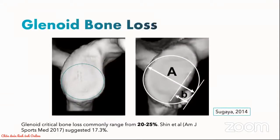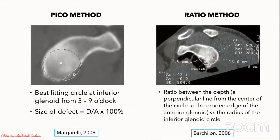If you view the glenoid en face using a 3D reconstruction, you should be able to appreciate a slightly pear-shaped appearance of the glenoid articular surface as shown by the image on the left. At the inferior half of the glenoid, normally you will be able to fit a best-fit circle fully. The image on the right shows a patient with shoulder instability and glenoid bone loss; the deficiency of the best-fit circle inferiorly annotates the degree of bone loss. Commonly, critical bone loss can range from 20% to 25% according to surgeon preferences. If you do not have access to 3D reformats, there are also other established measurement methods to quantify degree of glenoid bone loss on sagittal CT reconstructions of the scapula, such as the PICO method and the ratio method.